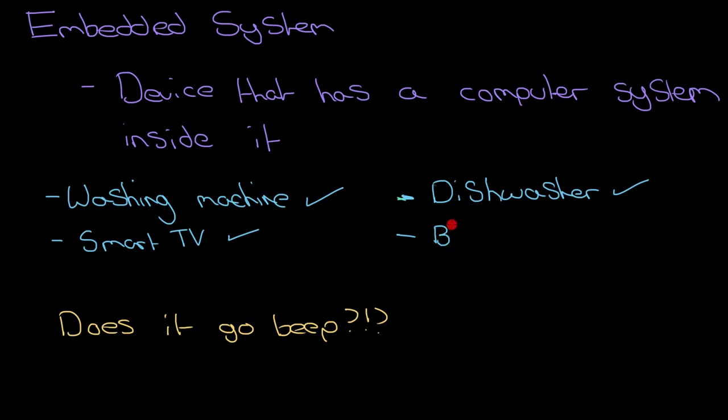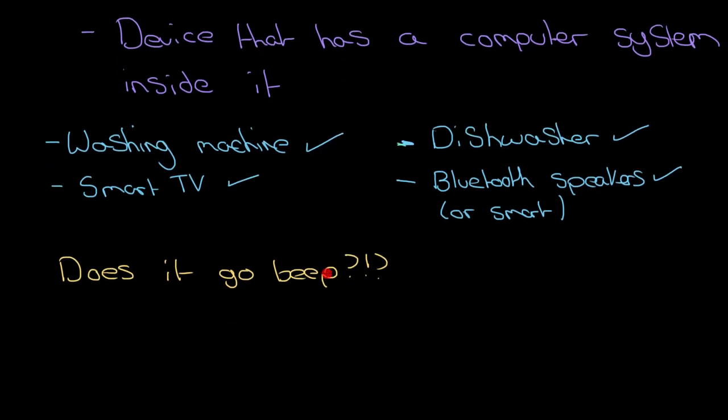What about these days we've got like Bluetooth speakers and things like that. So that is definitely an example of an embedded system too. Or smart speakers as well, things like the Amazon Echo, stuff like that. They are examples of embedded systems because they are a speaker with a computer inside it. So there are some solid examples of embedded systems around your house.